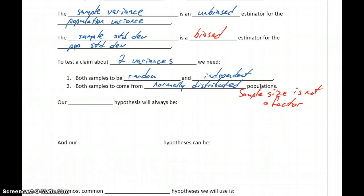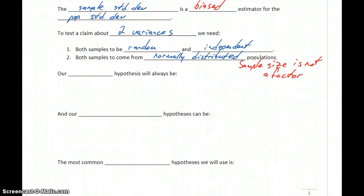Even if you had very large samples—if our sample size is 25 or larger for both—that's not enough to be able to test claims about variances. We have to be able to conclude that our data sets come from normally distributed populations.